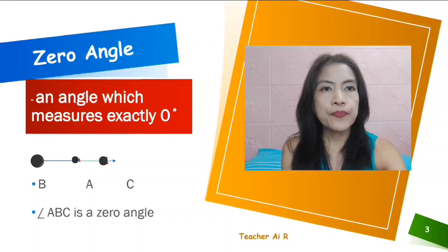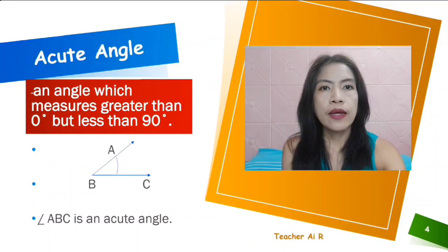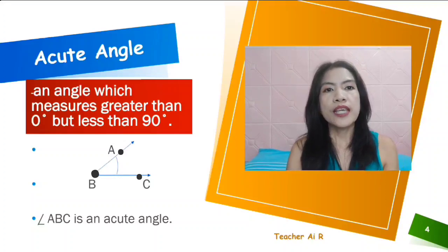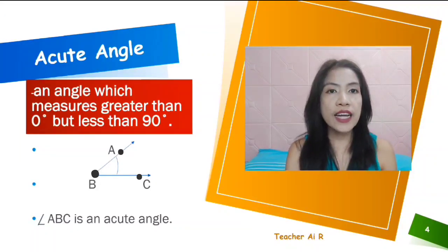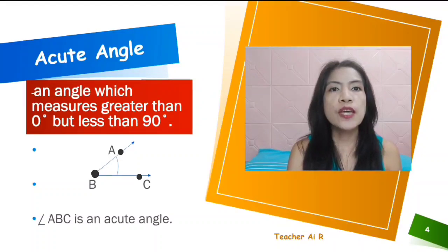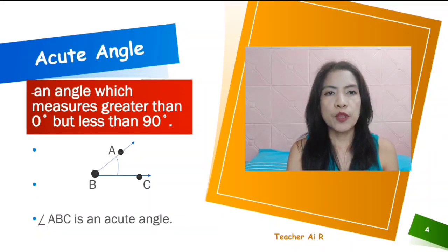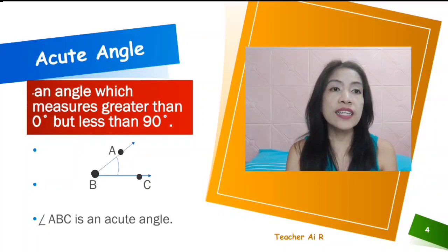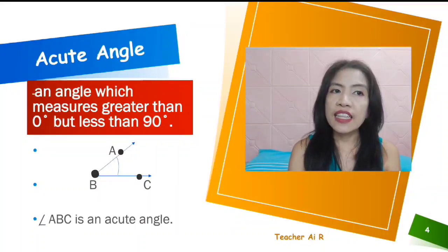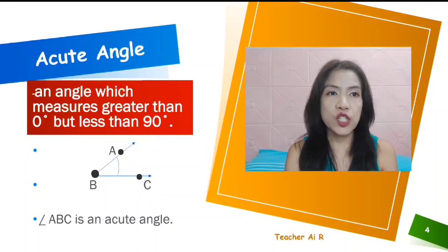And then, when we say acute angle, it's an angle which measures greater than zero, but less than 90. If you could see there, the angle ABC is an acute angle — it's less than 90 but more than zero.